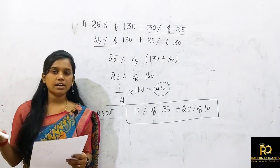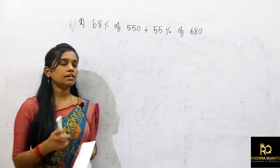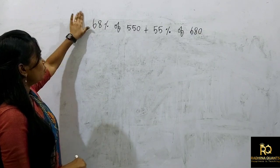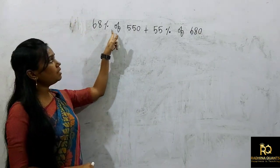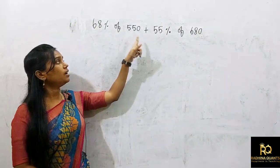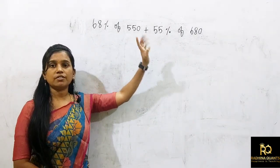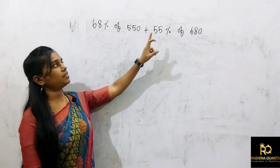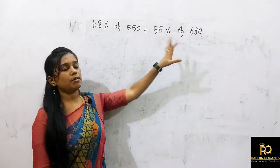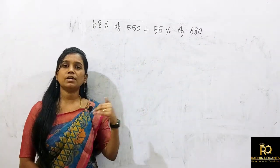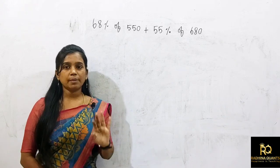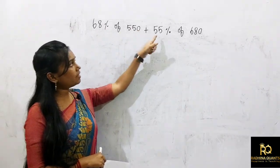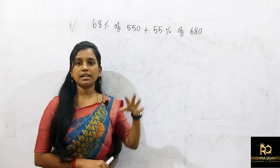Let's go to question 2, serial number 2: 68% of 550 plus 55% of 680. If you look at 68% or 55%, those numbers — 550 and 680, 68 and 55 — they are the same terms. Let's apply some tricks here.